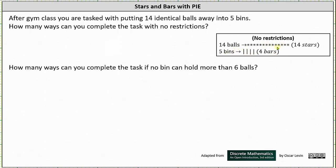Any string we can form with 14 stars and four bars represents one possible way of completing the task with no restrictions. The number of strings of length 18 that we can form with 14 stars and four bars equals the stars plus bars choose the number of bars, which gives us 18 choose 4 — that is, 3060 ways to complete the task with no restrictions.